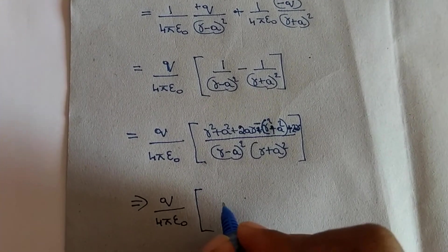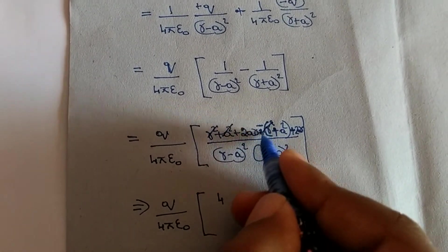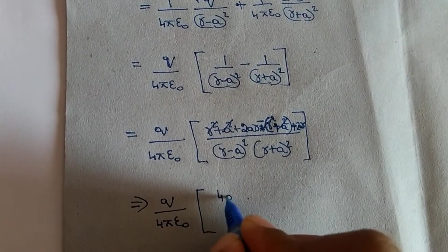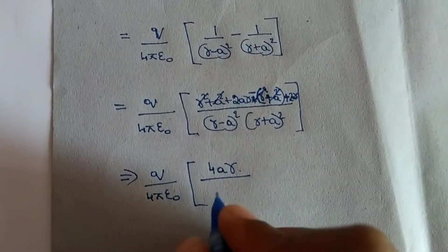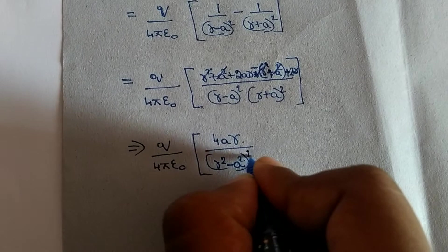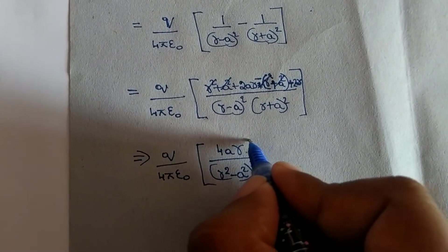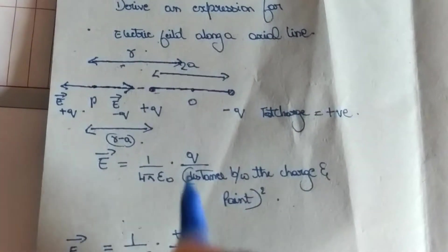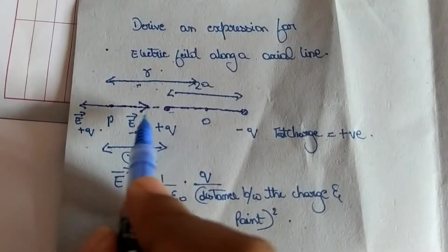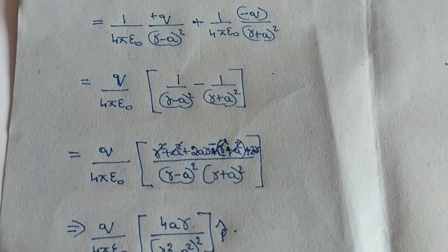This cancels each other. 4ar divided by r square minus a square whole square. And it's acting along the axial line which is given by p cap direction.